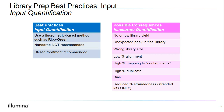Possible consequences of inaccurate quantification include no or low library yield, unexpected peaks and library size, low percent alignment, high percent mapping to contaminants, high percent duplicates, and bias. For our stranded kit, we can also have reduced percent strandedness.